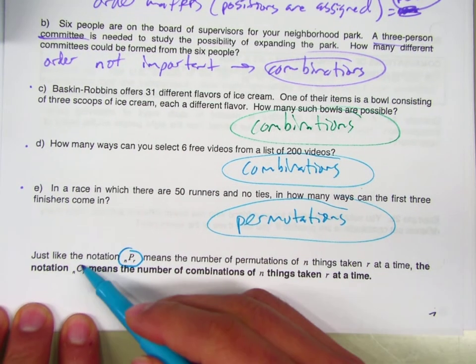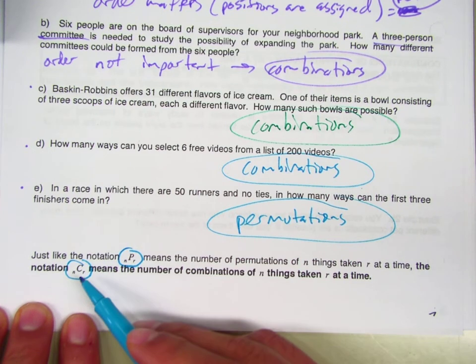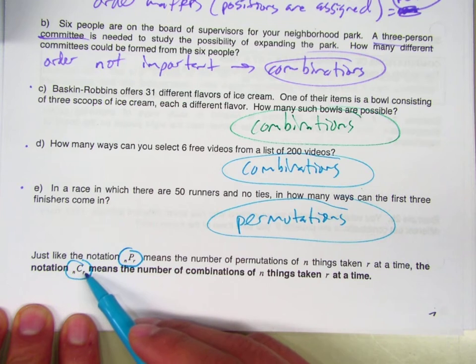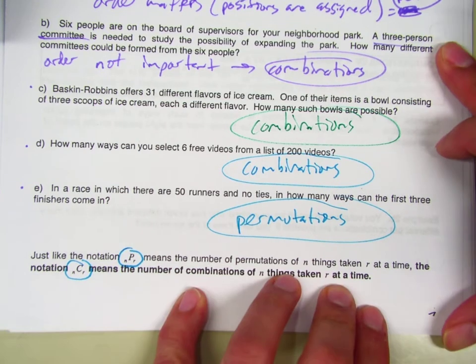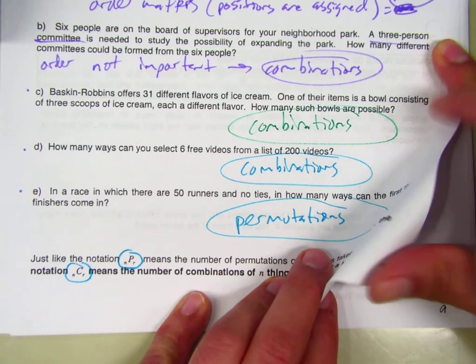If we see NCR, it's kind of the same thing, except now it's talking about a combination. N is still the total. R is still the number of items or people or whatever being chosen for that group. Does that make sense as far as notation goes?